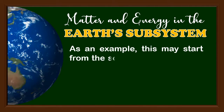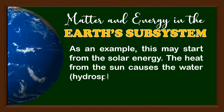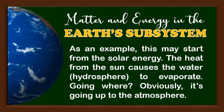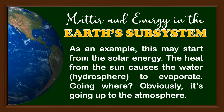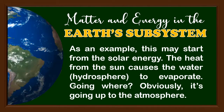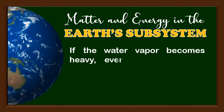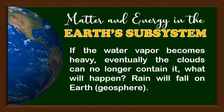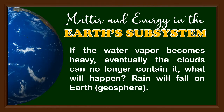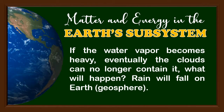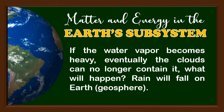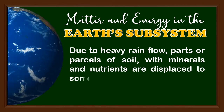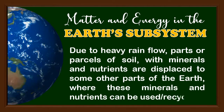As an example, this may start from solar energy. The heat from the sun causes the water in the hydrosphere to evaporate, going up to the atmosphere. If the water vapor becomes heavy, eventually the clouds can no longer contain it — rain will fall on Earth, and that's the geosphere. Due to heavy rain flow, parts or parcels of soil with minerals and nutrients are displaced to other parts of the Earth, where these minerals and nutrients can be used or recycled.